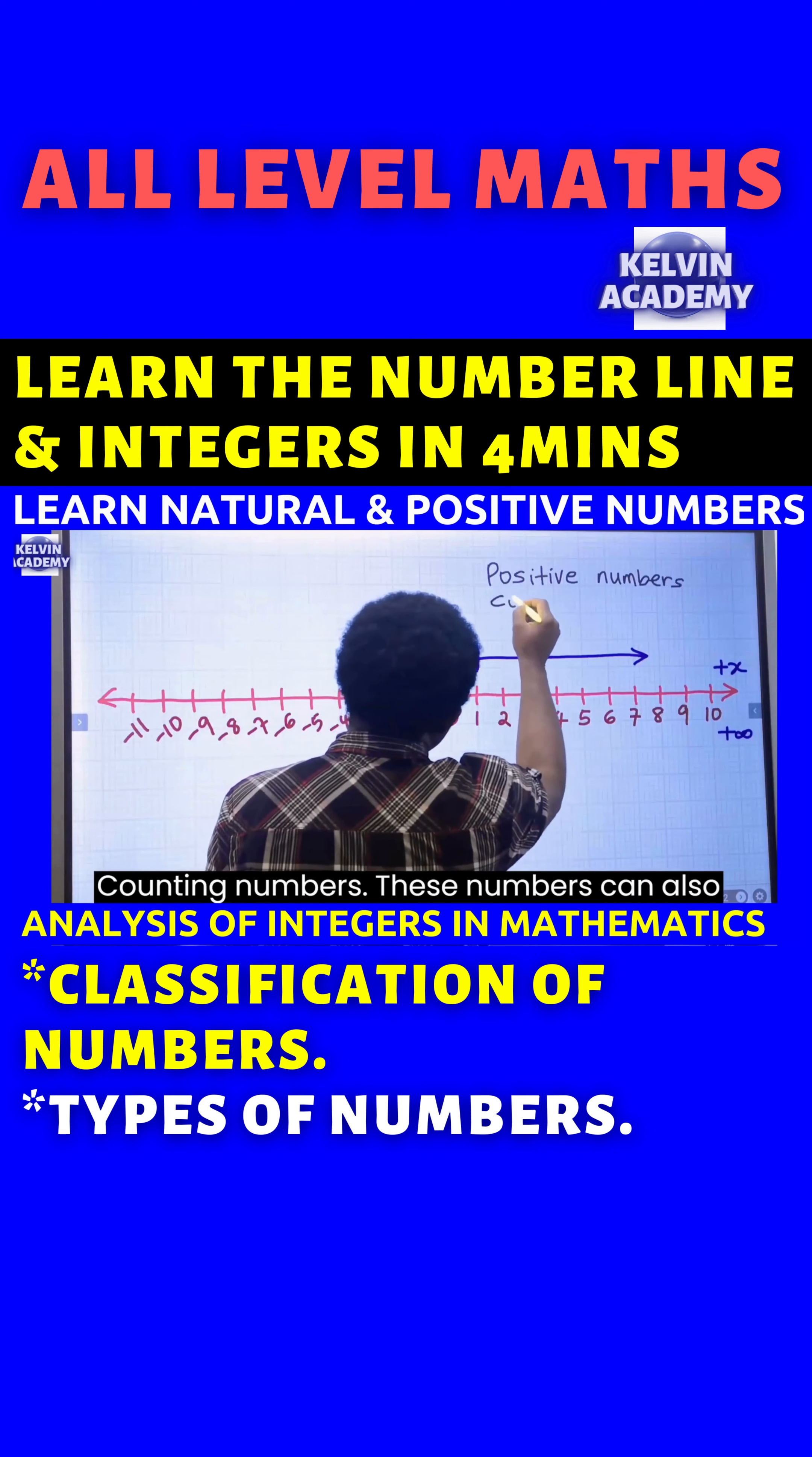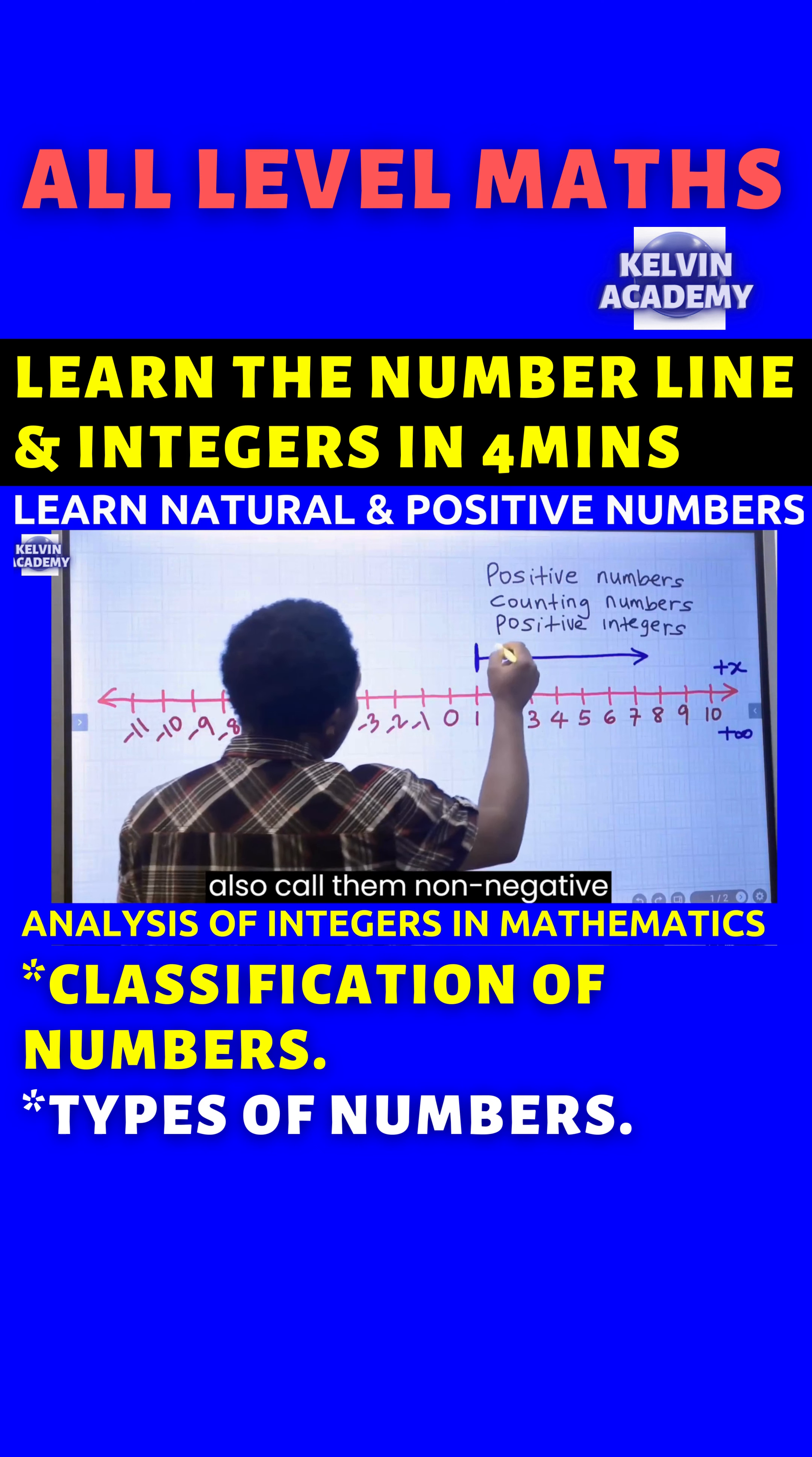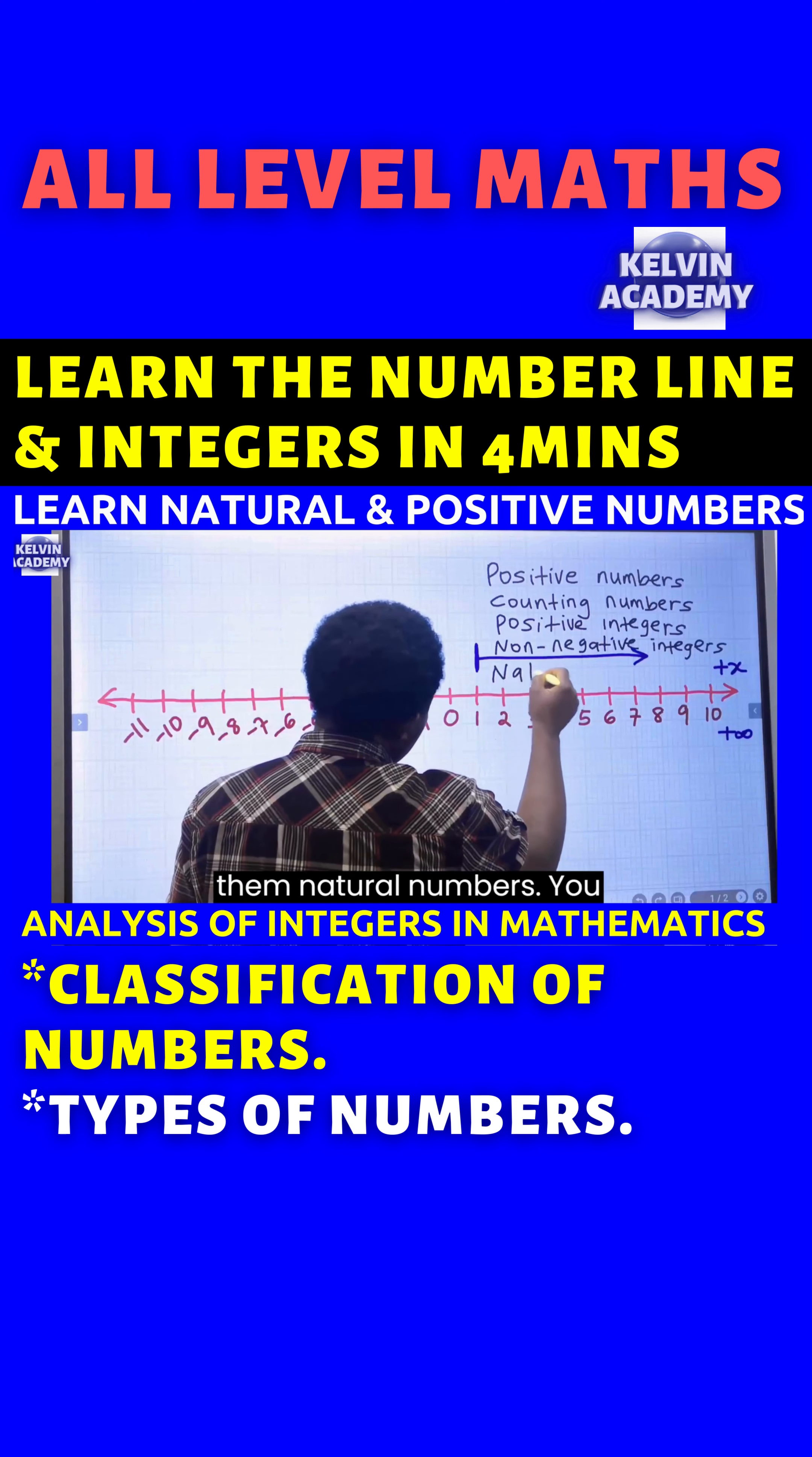We can also call them counting numbers. These numbers can also be called positive integers. We can also call them non-negative integers. And we can also call them natural numbers.